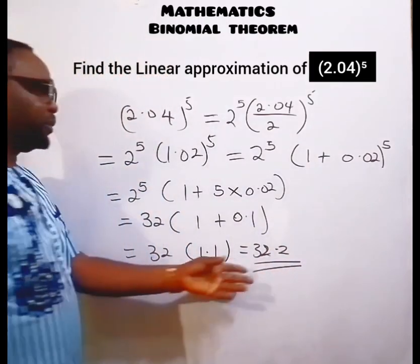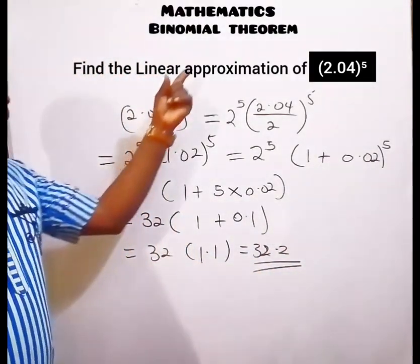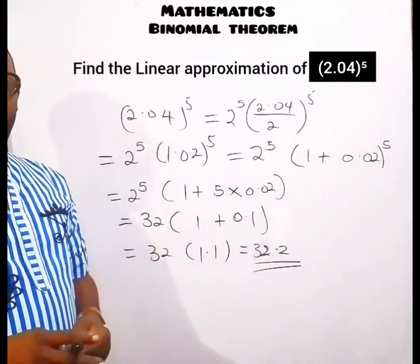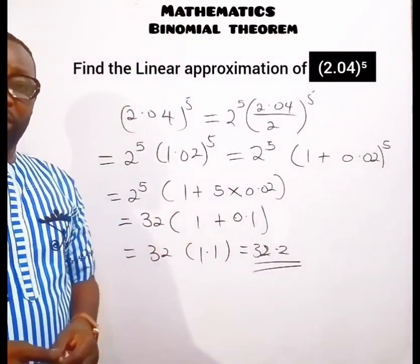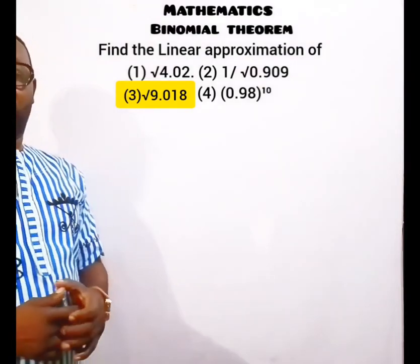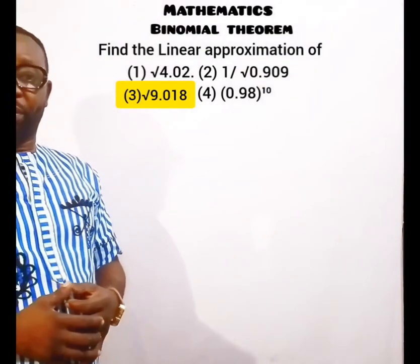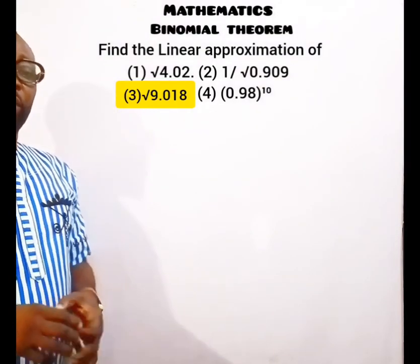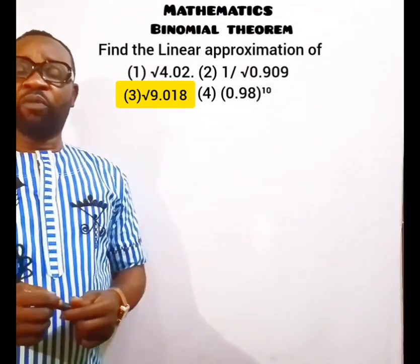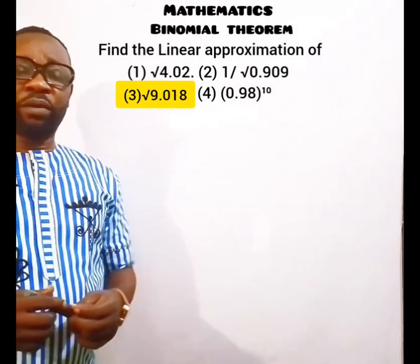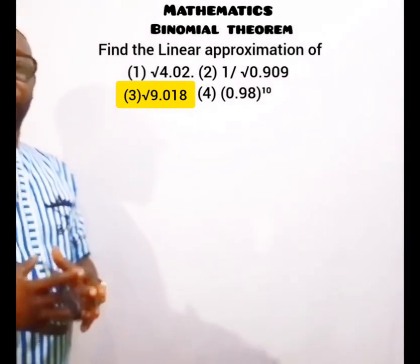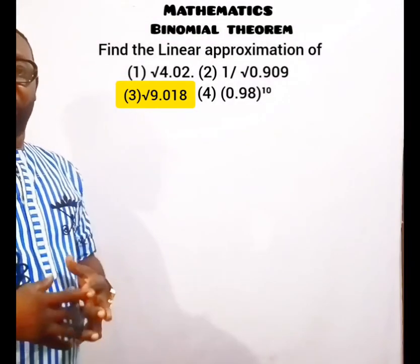That is the value of the linear approximation of 2.04 raised to the power of 5. Let's take a look at the next question — we have more questions under linear approximation. Don't forget, we are still under the binomial topic.